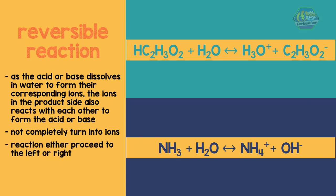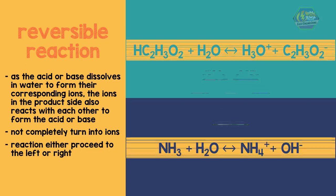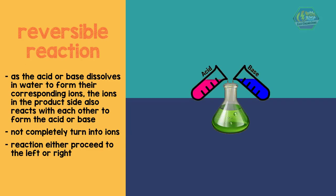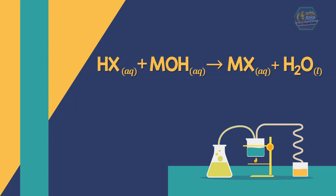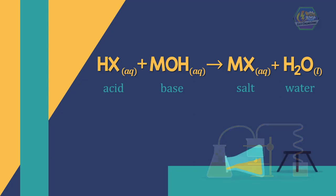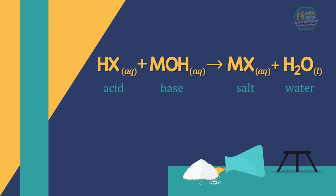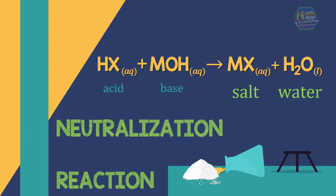Now let us discuss what happens when we mix acid and base. The chemical equation of the acid-base reaction shows that the reaction produces salt and liquid water. The salt is either aqueous or solid depending on its solubility. This is why when you spill an acid on the floor, you put a base on it — the acid and base reaction produces water and salt. This kind of reaction is also known as a neutralization reaction.